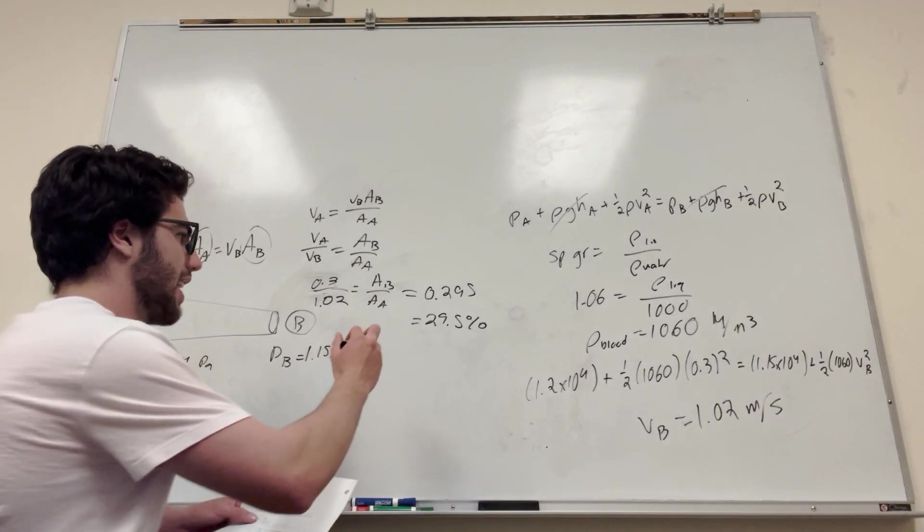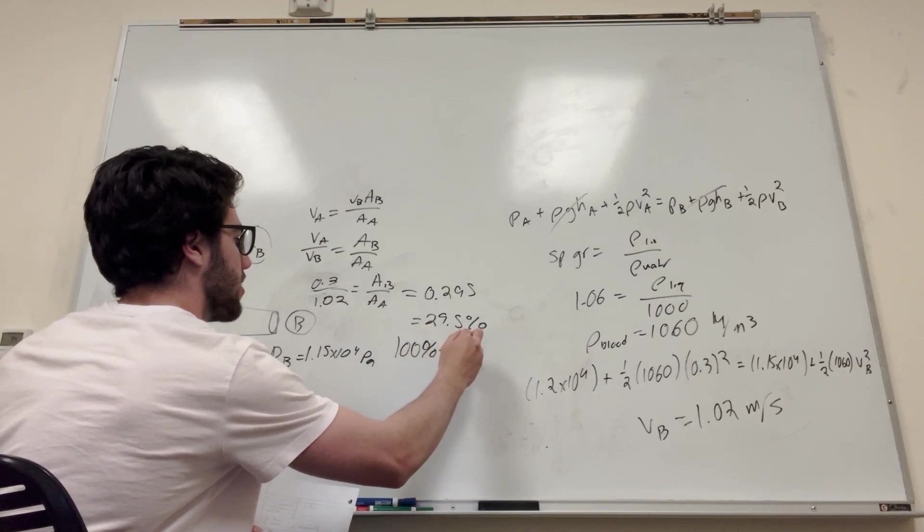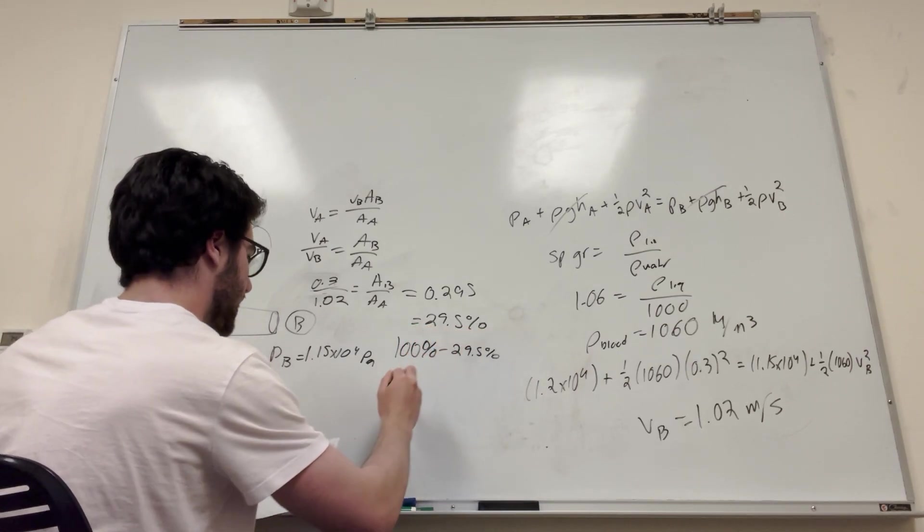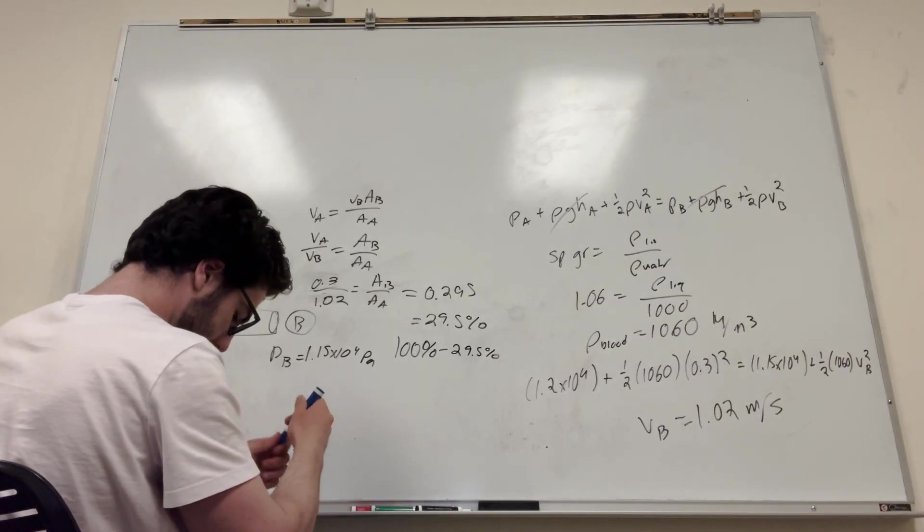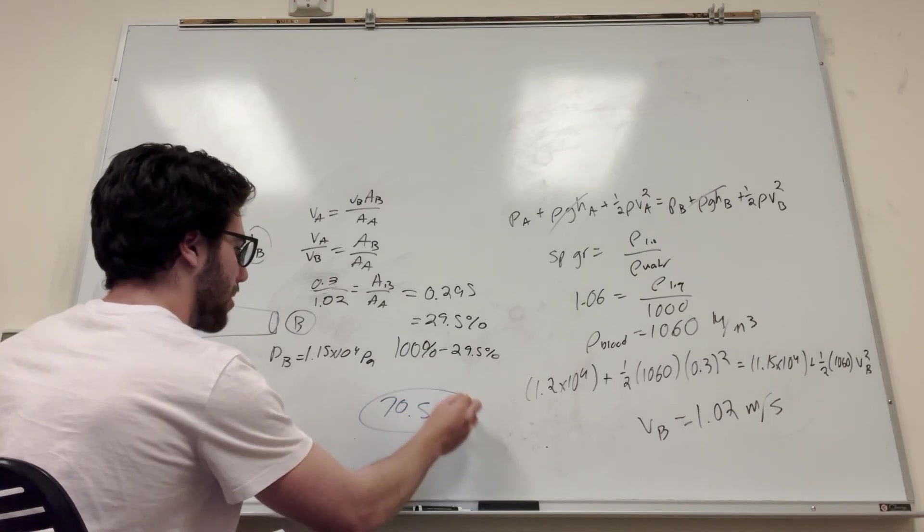So if you're trying to find how much is blocked, you're going to take 100% and subtract it by this number, 29.5%. And that's going to get you the final answer, which is 70.5% is blocked by plaque.